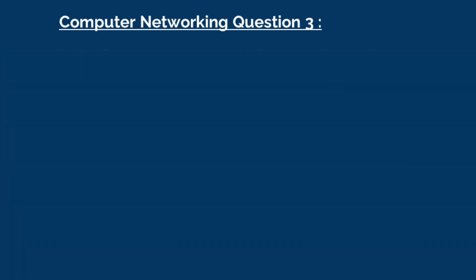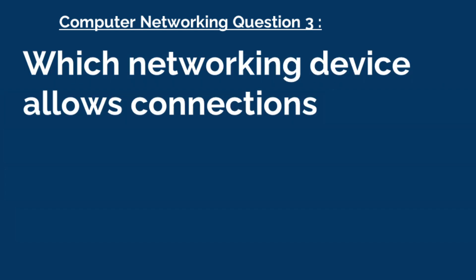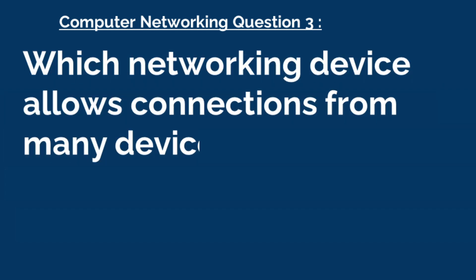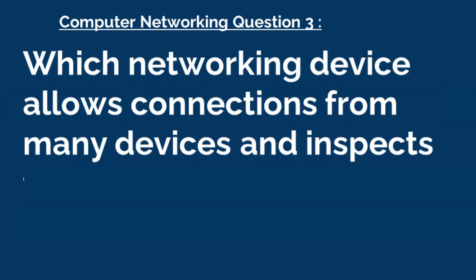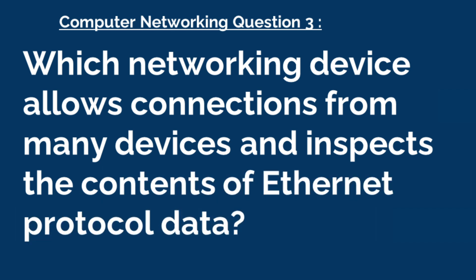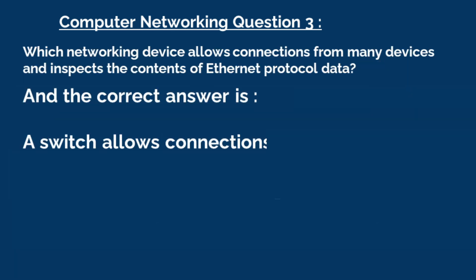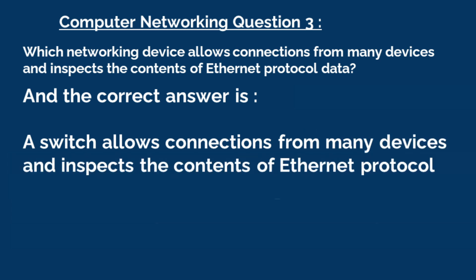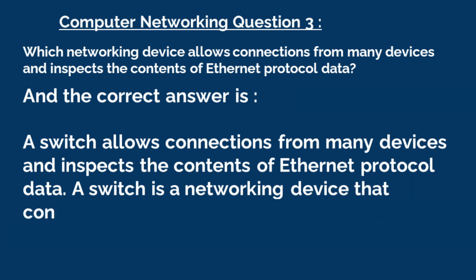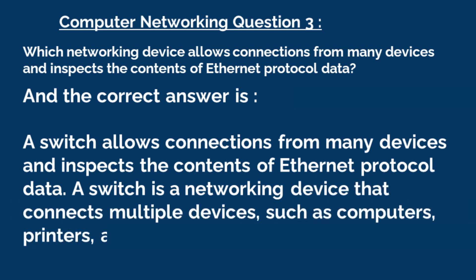Question 3: Which networking device allows connections from many devices and inspects the contents of Ethernet protocol data? The correct answer is, a switch allows connections from many devices and inspects the contents of Ethernet protocol data. A switch is a networking device that connects multiple devices such as computers, printers, and servers on a network.